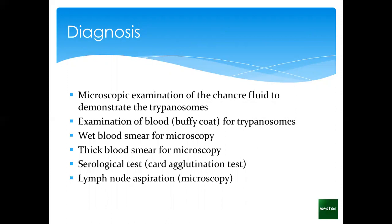How does this disease get diagnosed? The common diagnostic approach is microscopic examination of chancre fluid, where they can see the trypanosomes. Or they can take a blood sample and do microscopy — either a thin or thick blood smear — looking for the buffy coat and trypanosomes. They can also do a serological test looking at antibodies against these antigens. Additionally, they can do a lymph node aspiration — especially cervical nodes if there's a Winterbottom's sign — and examine the lymph under a microscope to see the trypanosomes.